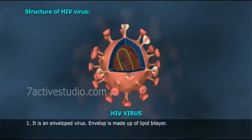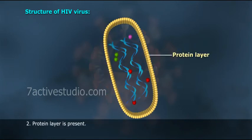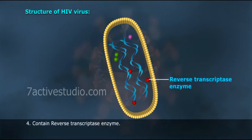Structure of HIV virus: 1. It is an envelope virus. 2. The envelope is made up of a lipid bilayer. 3. It contains ssRNA — single-stranded ribonucleic acid — as its genetic material. 4. It contains reverse transcriptase enzyme.